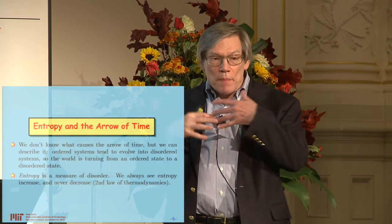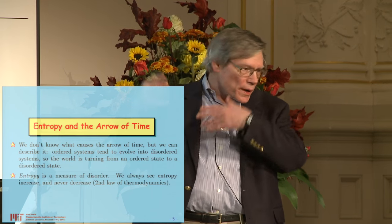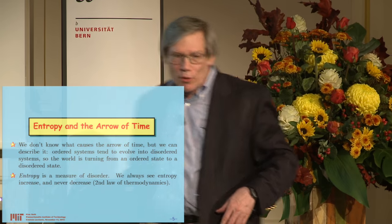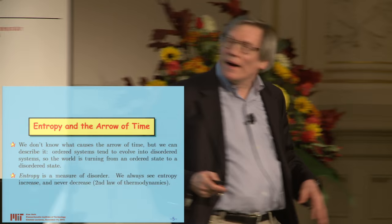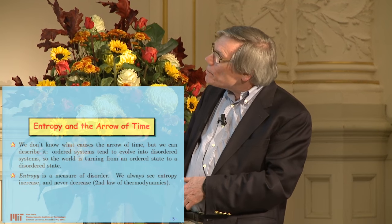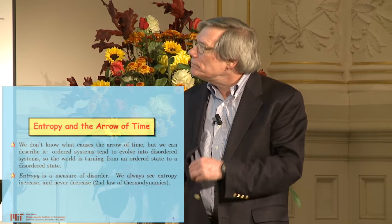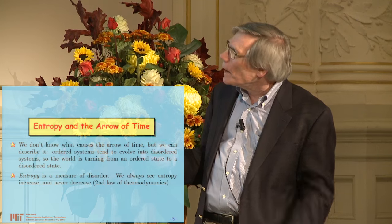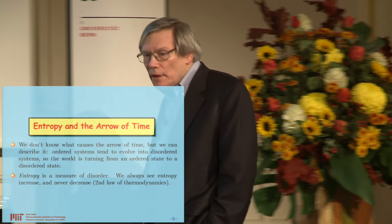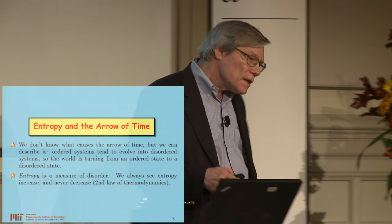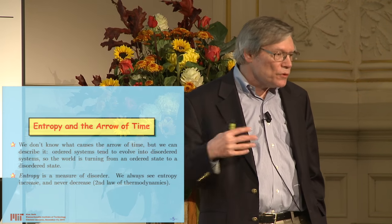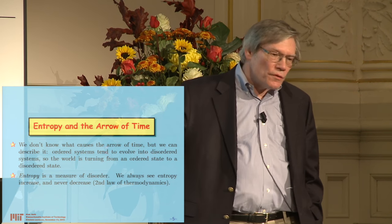If a system randomly moves through the space of all possible states, it tends on average to move to a disordered state from an ordered state. The measure that physicists use for this disorder is what's called entropy, and it can be precisely defined. We always see the entropy increase and never decrease — that statement is what we call the second law of thermodynamics. It's usually thought of as being a statistical law, not a fundamental law of nature, but something which happens when you apply simple probability theory to the fundamental laws of nature.